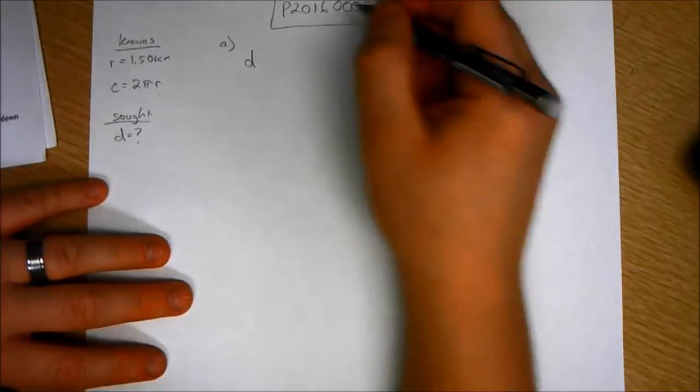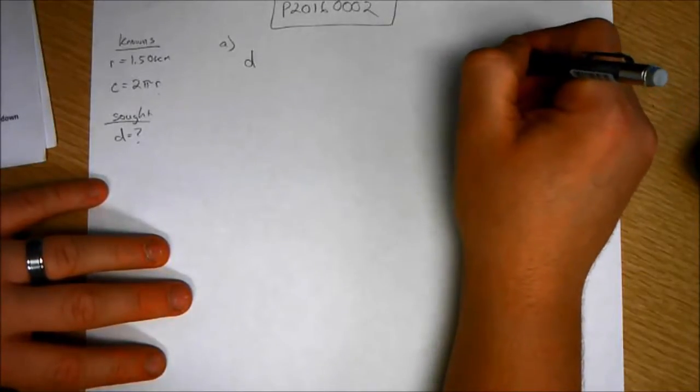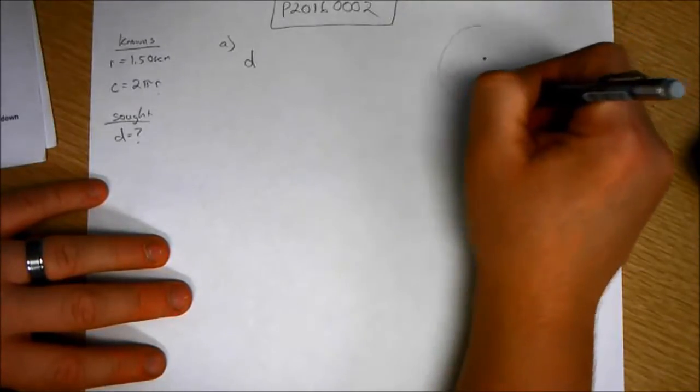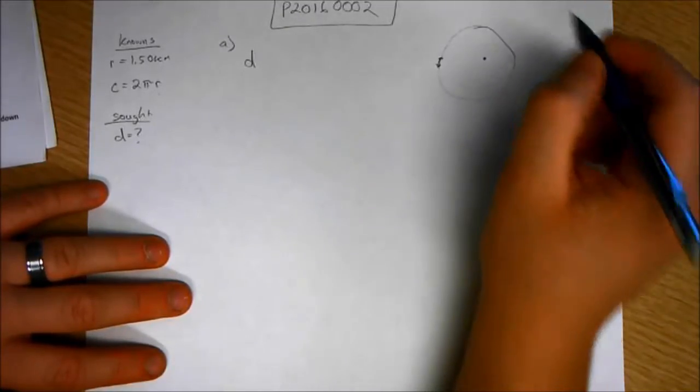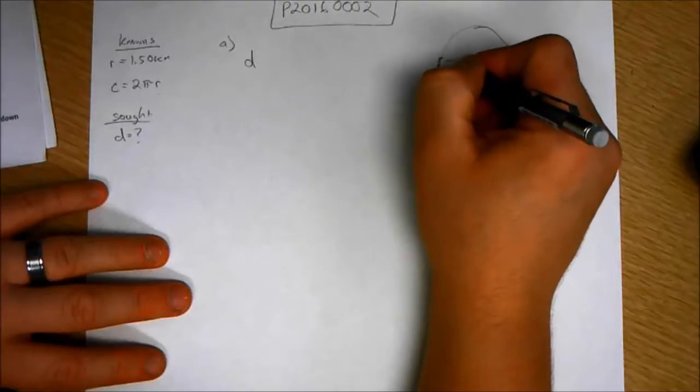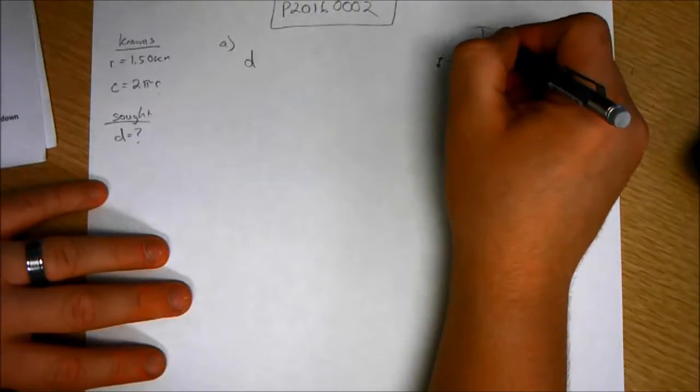So the distance, if I draw a little diagram, this is the path. They start on the west side and they start walking down. They walk three-fourths of the way around, so they end up here.